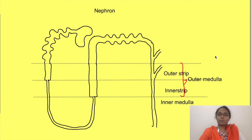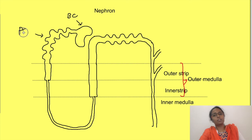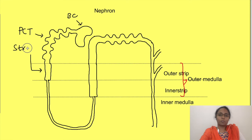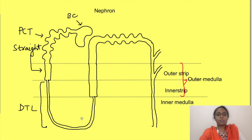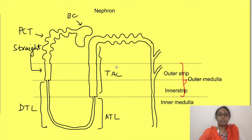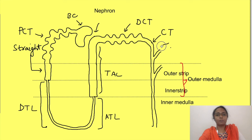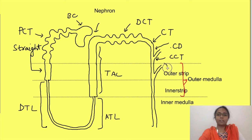Let us now see the anatomy of a nephron. A nephron consists of a Bowman's capsule, proximal convoluted tubule, straight part of proximal tubule, descending thin limb which enters into the medulla. Then the nephron curves back and ascends in medulla — this is the ascending thin limb. In outer medulla and cortex, it continues as thick ascending limb coming close to Bowman's capsule, then continues as distal convoluted tubule, connecting tubule, and collecting duct — which has a cortical portion known as cortical collecting duct and then a medullary portion known as medullary collecting duct.